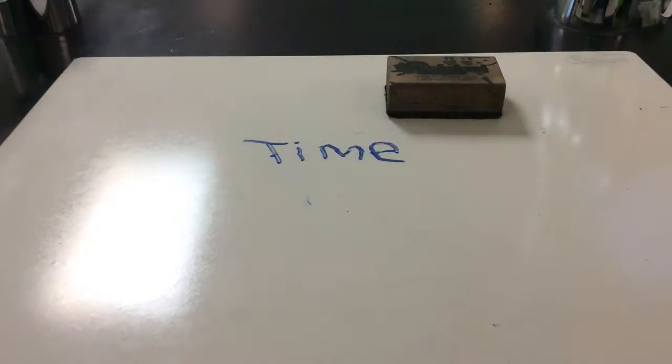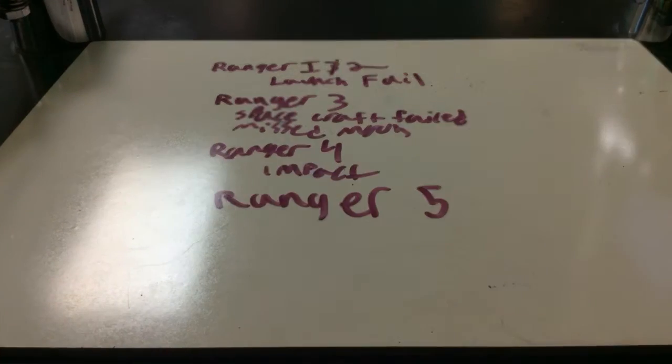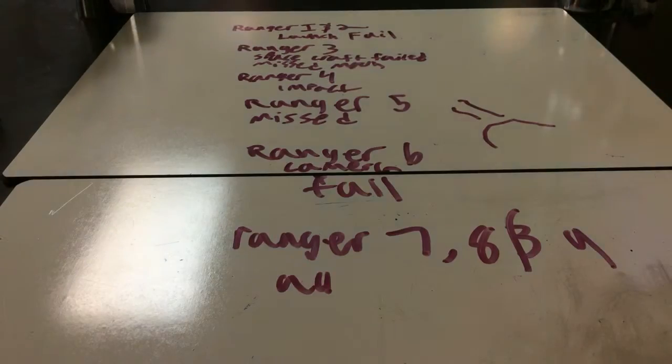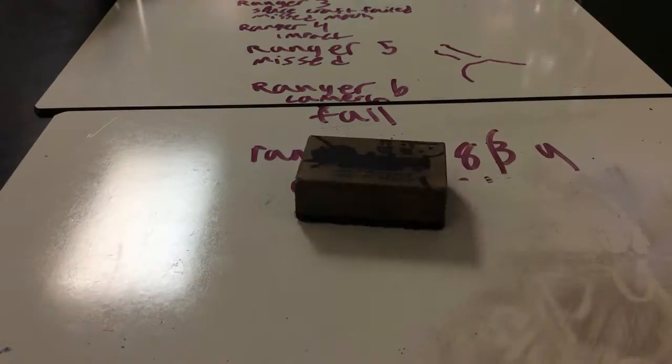Apologize if the handwriting is a little undesirable. Three, four, five, six, seven, eight, and nine were all successful launches. Impact were successful, they've all did what they were supposed to do.